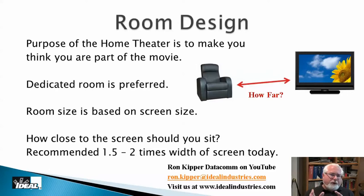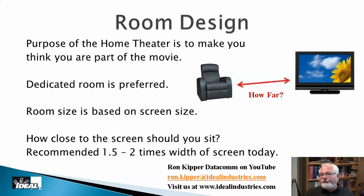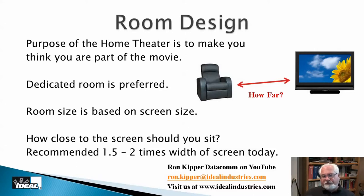How close are we supposed to be sitting to a TV today? The answer is they keep moving us closer. Back in the year 2000, three to four times the width of the screen was typical. Then a few years later it was two to three times the width. Nowadays I hear people saying about one and a half to two times the width of a screen. The purpose of the home theater is to fill your vision with the screen, and on top of that, the resolution in these TVs has gotten so good you can walk right up and not see the pixels.